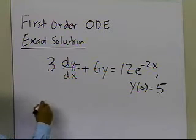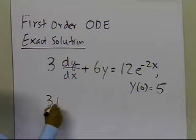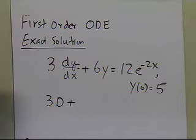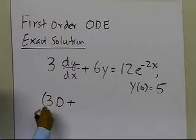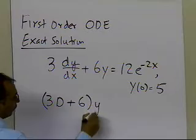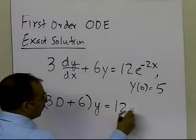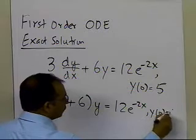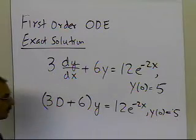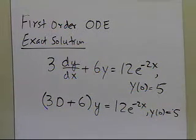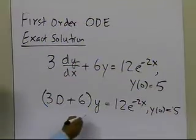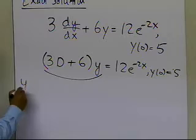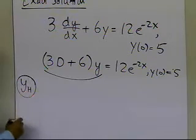I'm going to write this differential equation in the form of the differential operator: (3D + 6) operating on y is equal to 12e to the power minus 2x, with y(0) equal to 5. By writing it in operator form, I directly get what the characteristic equation is.